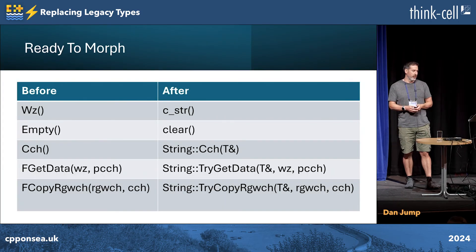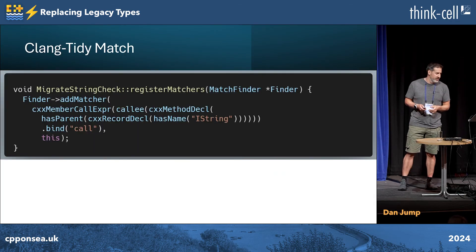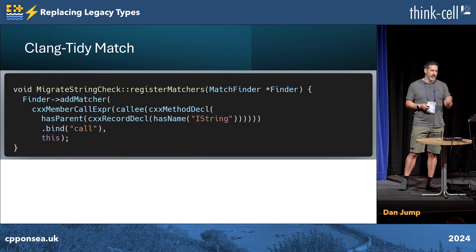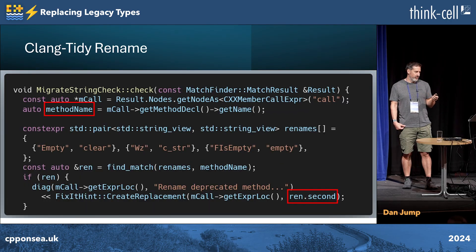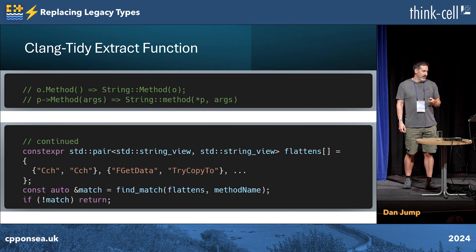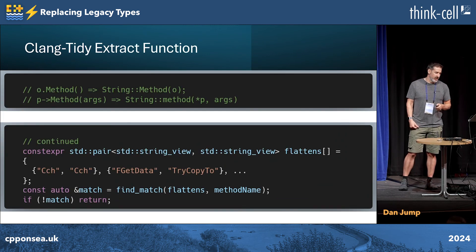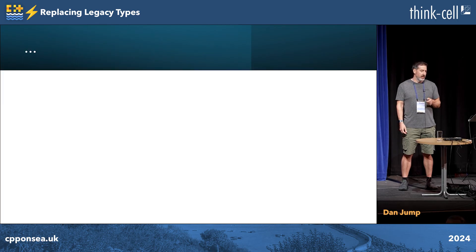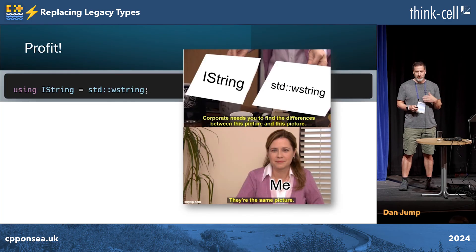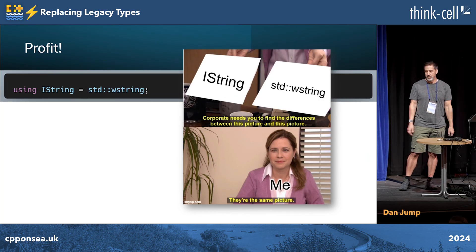So we're ready to do this transform. We have some simple rename functions, and then we have these extract methods, and clang-tidy to the rescue. We write a matcher that basically matches any method call to an istring method. We do the simple one first: get the method name from the callback, see if it's one of our renames, and if it is, create a replacement. The extract one is slightly more complicated — basically see if it's one of our matches, see if we need to add a 'this' or not, see if we need to dereference the thing, and then we do a replacement and insertion — dot dot dot, profit. When the two things are the same, we can just do 'using istring = wstring', swap everything out, and then later clean up to get rid of the cruft.